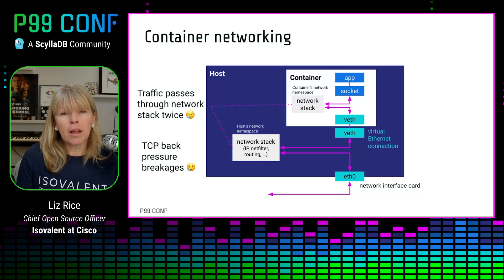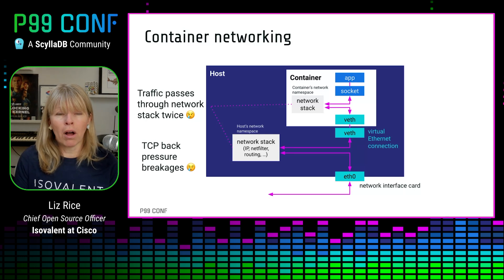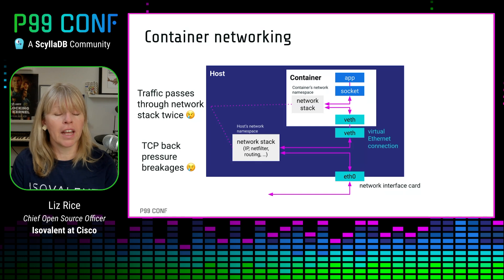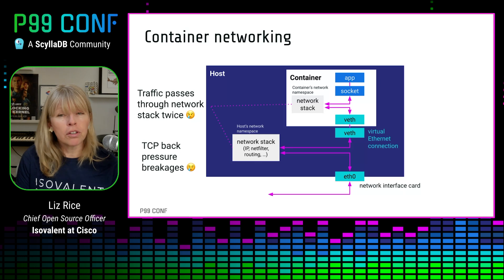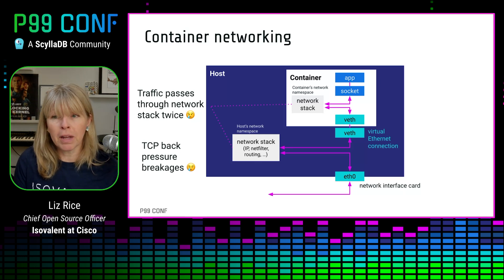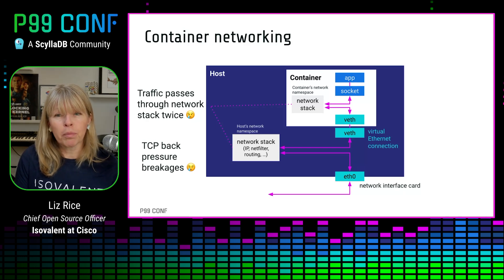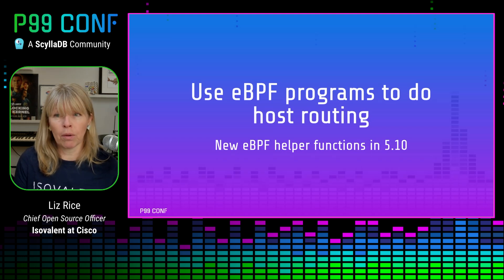When you see this diagram, it might bring to mind other talks about the Cilium project and how it streamlines Kubernetes networks by eliminating a component called kube-proxy and using eBPF programs to replace kube-proxy's use of IP tables rules. Those IP tables rules can get really inefficient at scale — but that's a separate story. In this talk, we're not using Kubernetes in this benchmark. Instead, we're going to look at how eBPF programs can now be used to bypass the host routing that has always been done within that upper networking stack.